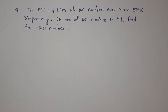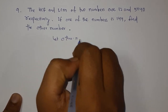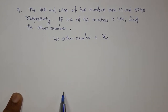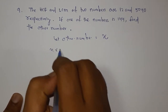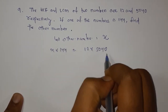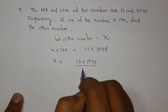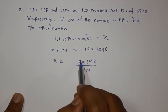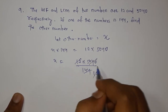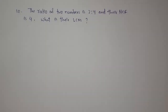Using the formula: HCF multiplied by LCM equals the product of the two numbers. So 12 multiplied by 5040 equals 144 multiplied by the other number. The other number equals 12 into 5040 divided by 144, which gives 420. The answer is 420.